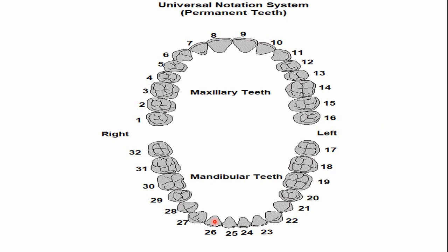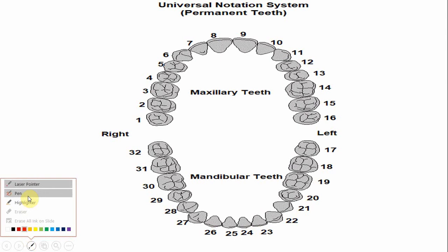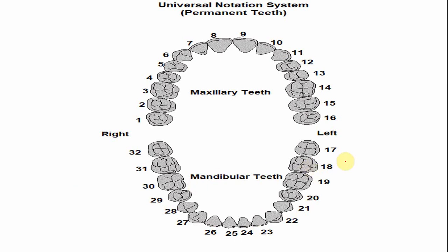In the universal numbering system, the number of the mandibular second molar for the left side is 18, and continuing in a clockwise direction, the number of the right mandibular second molar is 31.